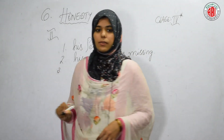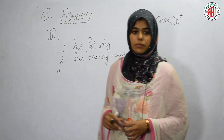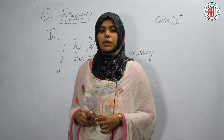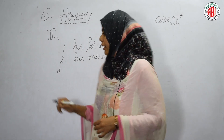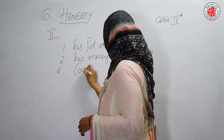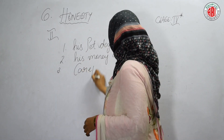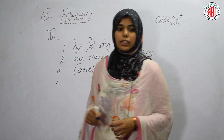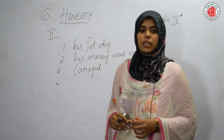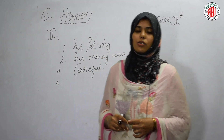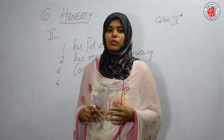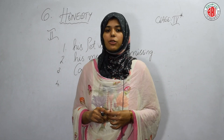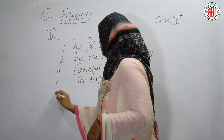The third question: we must be blank with our money. The answer is we must be careful with our money. The fourth question: the fruit seller gave blank extra. How many rupees did the fruit seller give to Chinna? The answer is 10 rupees.